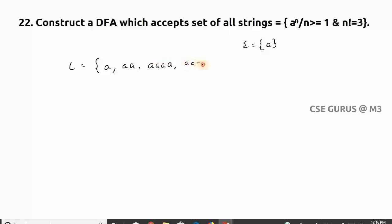Now how to construct the DFA for this? For q0, if it takes a single 'a' it is going to final state. Two a's, it is going to final state.